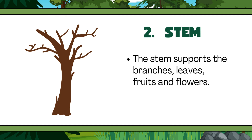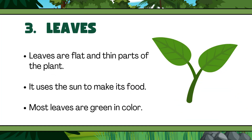2. Stem. The stem supports the branches, leaves, fruits, and flowers. 3. Leaves. Leaves are flat and thin parts of the plant. They use the sun to make food. Most leaves are green in color.